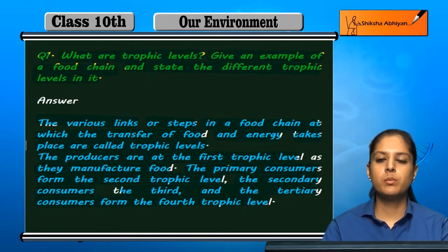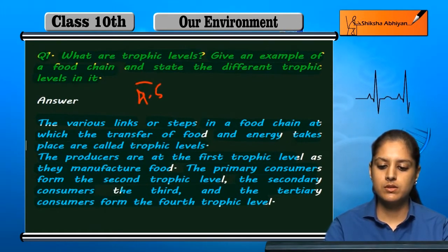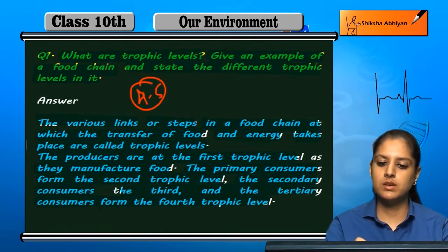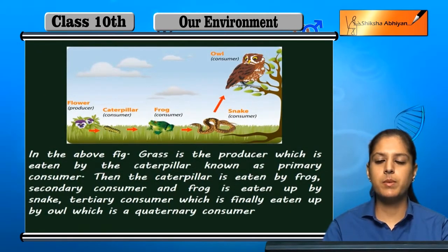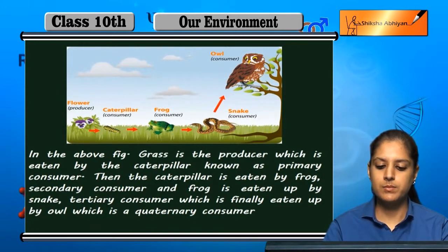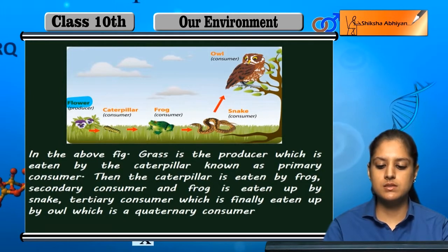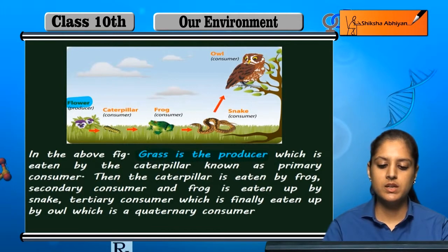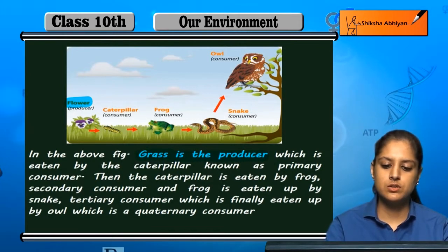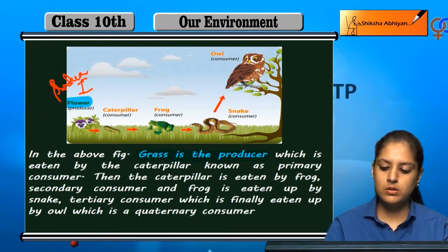The main trophic levels last up to four to five levels. Let us understand this better by an example. In this figure, you can see grass, which is the producer — this is the first trophic level.